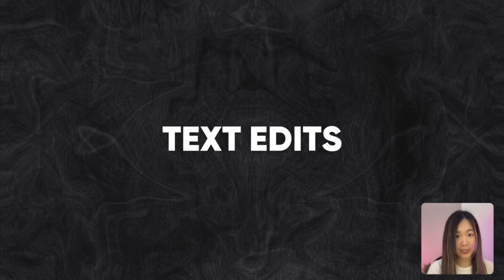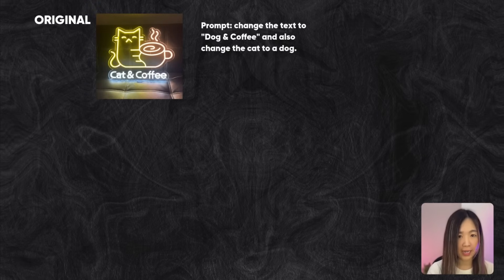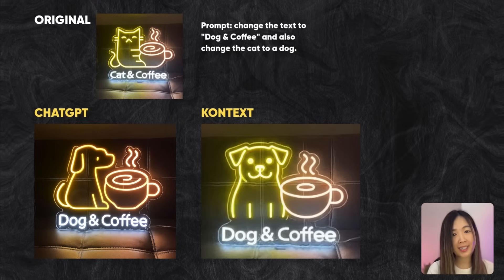Let's test how both models handle text edits. Starting with a neon sign product shot of a cat clinging to a coffee cup with the text 'cat and coffee,' I asked both models to change 'cat' to 'dog' for both the text and the sign. Both models passed. Context was more consistent with the original style and gave a cleaner, more precise edit, while ChatGPT gave a slightly more polished, ChatGPT-branded vibe.